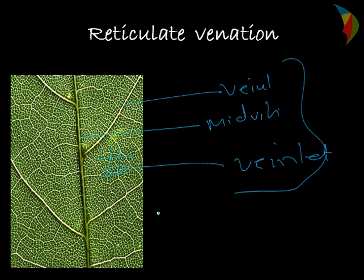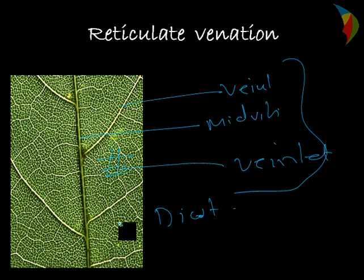Reticulate venation is found in dicotyledons. As you know, the veins are the main suppliers for all the translocation of food and materials in the plant, and all the photosynthates are transported from the plant's leaf to the other parts of the plant. This is the main function of the veins and veinlets.